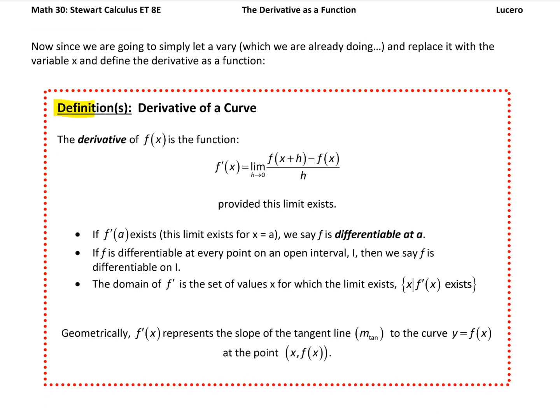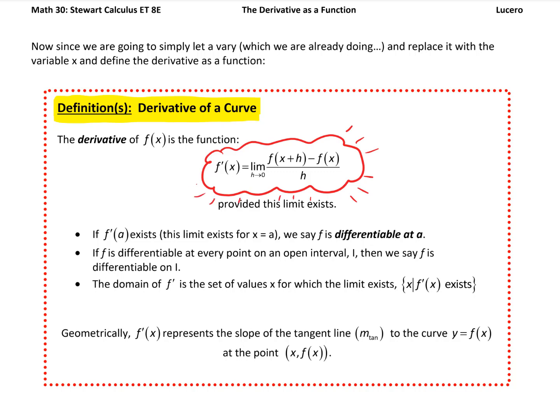Let's define the derivative of a function. Notice we're literally just replacing a with x. We call it a function: f prime of x is equal to the limit as h goes to zero of f of x plus h minus f of x, all over h. This is our limit definition of the derivative as a function — and I'll highlight it, because it's definitely important. It's the crux of the next several sections and chapters, and it's been building up for an entire chapter.